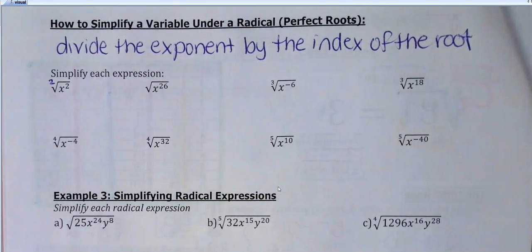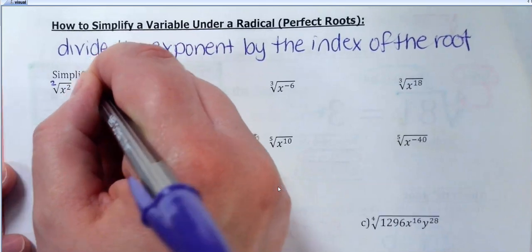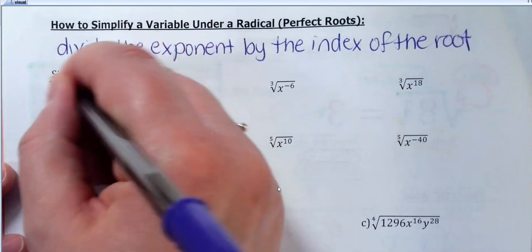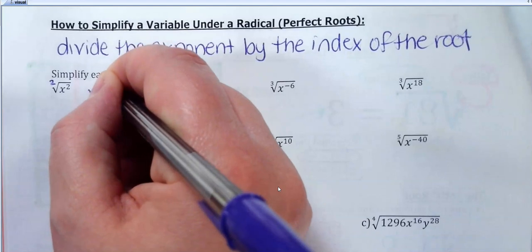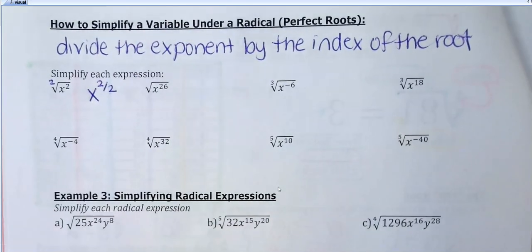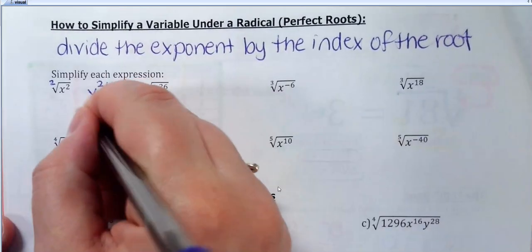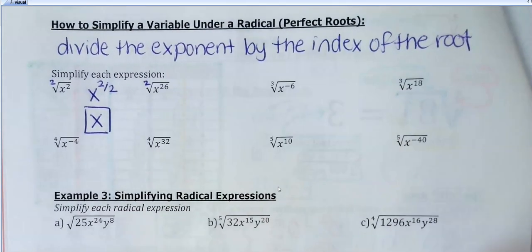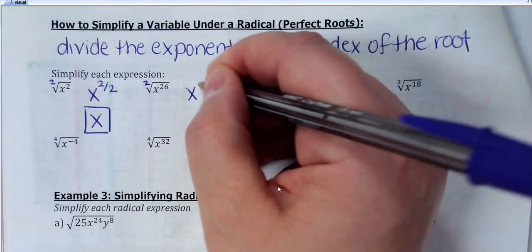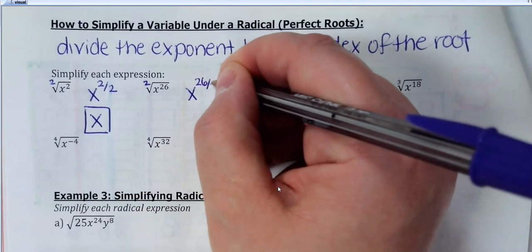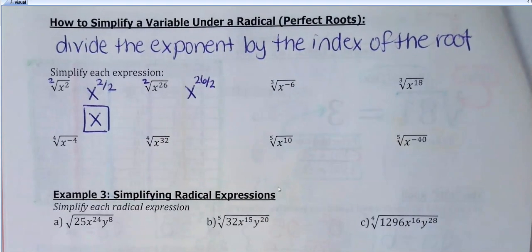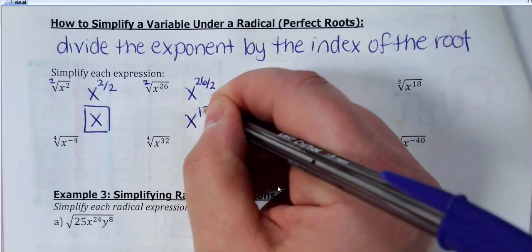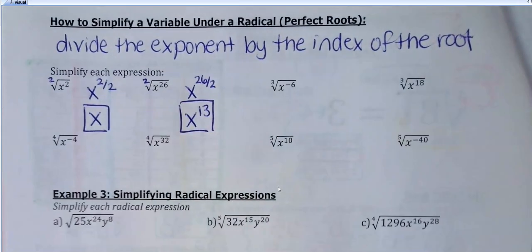So my first example is the square root of x squared. Take the exponent on the variable, which is 2, divide it by the index of the root, which is also 2 — that becomes 1. So this would just be x to the first, or just x. If I have the square root of x to the 26th, take your exponent 26, divide it by the index 2 — that's 13. It changes the exponent to 13 and gets rid of the radical.